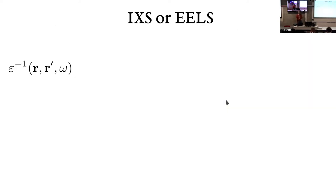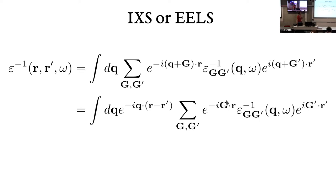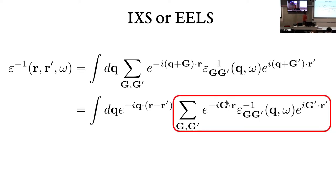For a function that depends on two points in space, we expand in G and G prime and separate the part depending on q from the parts depending on G, since we want to single out the momentum q. Again we have a quantity that depends on r prime, parametrically in q, and of course has a value for each frequency. This is the quantity we want to average out.